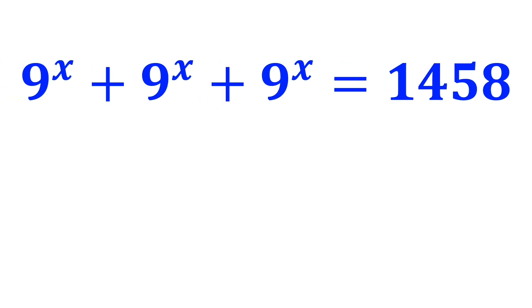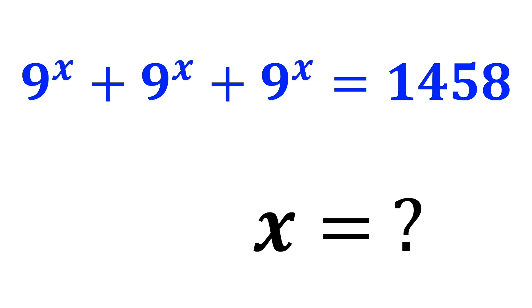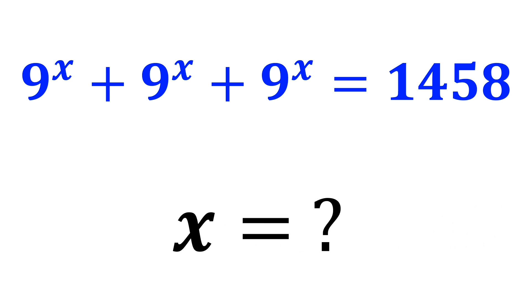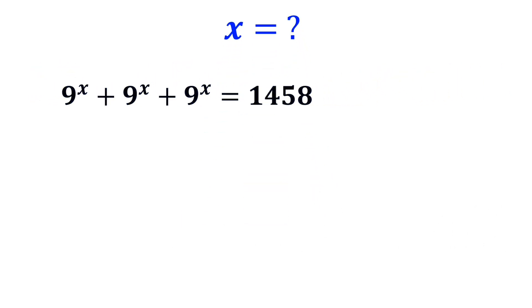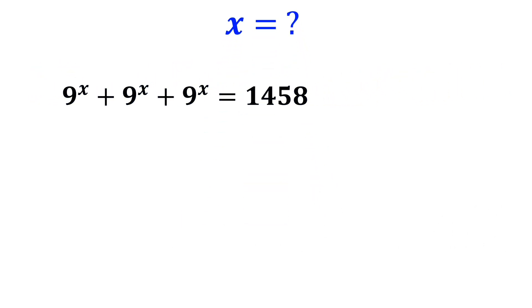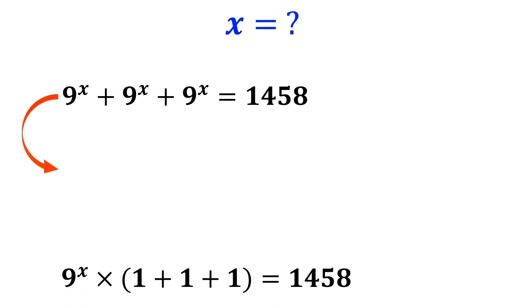If 9 to the power of x plus 9 to the power of x plus 9 to the power of x equals 1458, then what is the value of x? Let's break it down step by step together. First, we write this equation as follows.